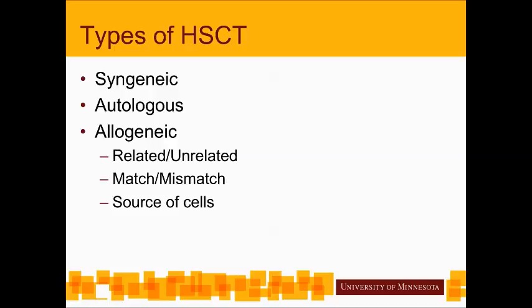To summarize the types of transplant: syngeneic involves genetically identical twins; autologous uses your own cells; allogeneic uses a donor who is not yourself or your twin — either a related sibling or an unrelated person from the community. A brother or sister is generally a perfect match due to being related, while unrelated donors may have high-level matches but also mismatches. The three main sources of cells are bone marrow, peripheral blood mobilized stem cells, and cord blood.